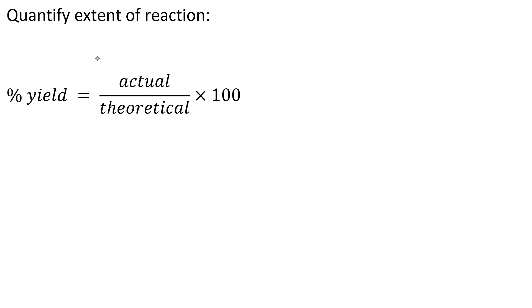We can calculate the extent of a reaction using the following equation. Percent yield equals actual over theoretical times 100, or %Y equals AY over TY times 100. So if we know two of these things, we can find the other.